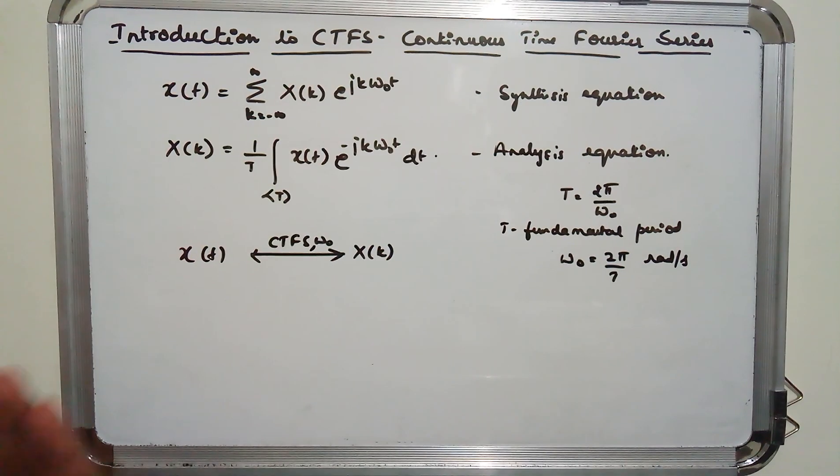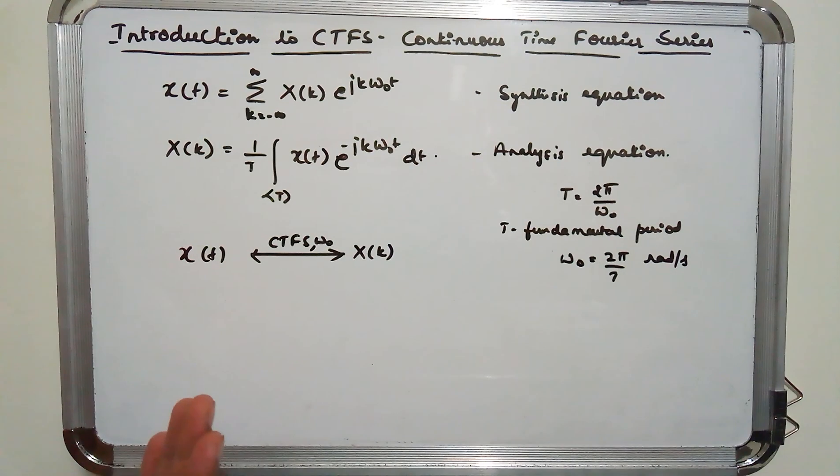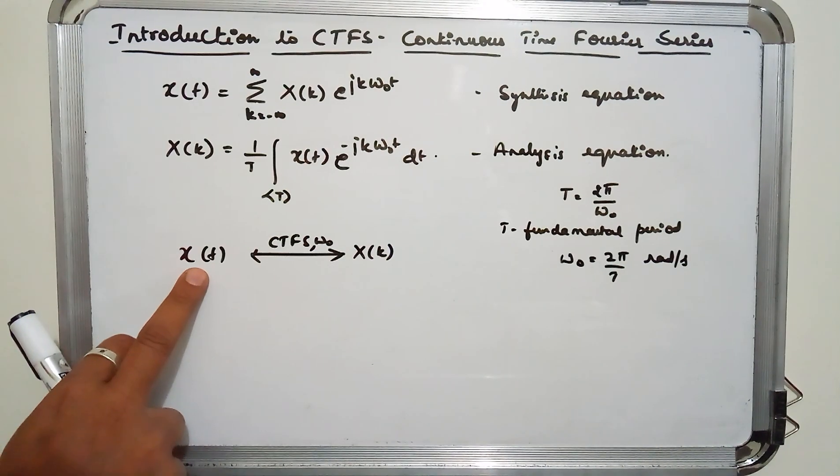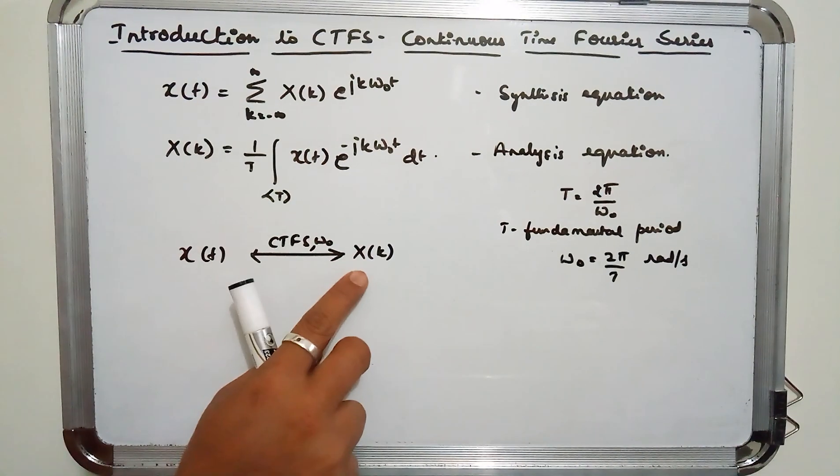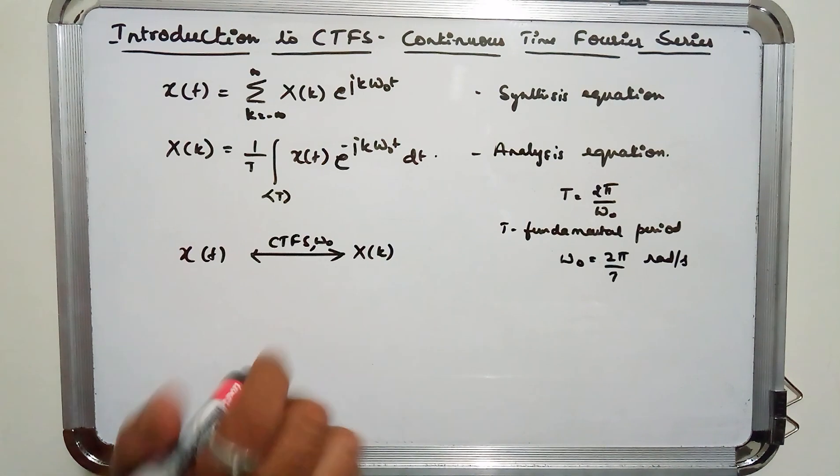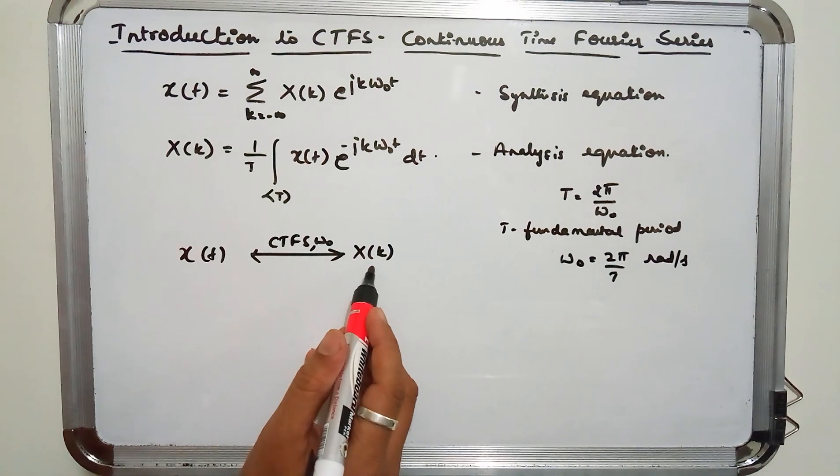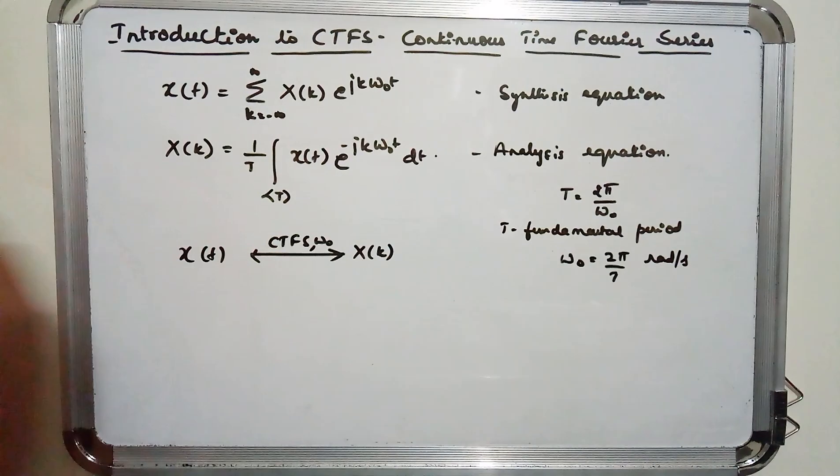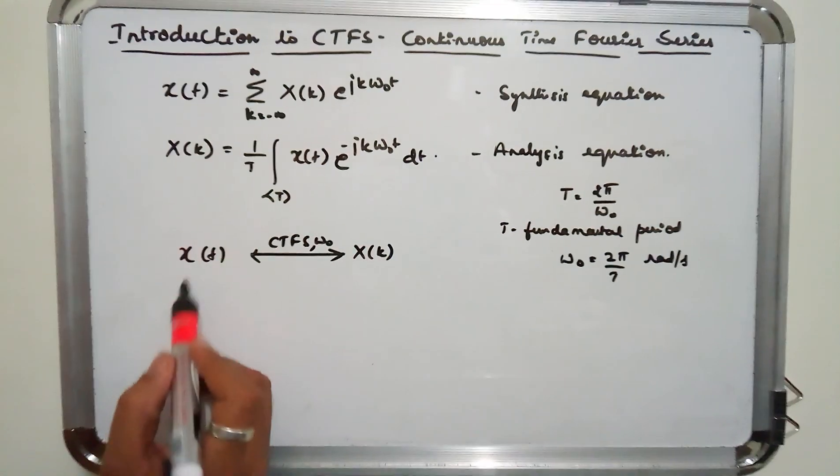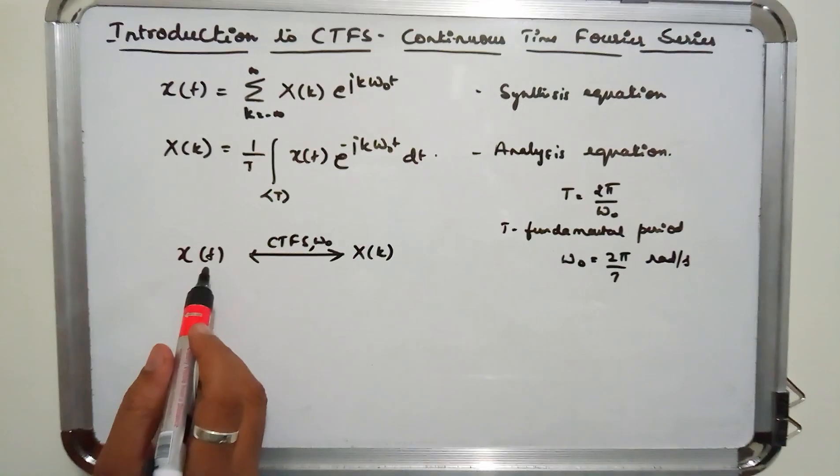DTFS dealt with the discrete time signal and its conversion into frequency domain. Now here we are dealing with continuous time signal, that is X(t), and its conversion into frequency domain, that is X(k). The X(k) here and the notation used in DTFS is same. Only the difference is in DTFS, X(n) was used. Here it is X(t).